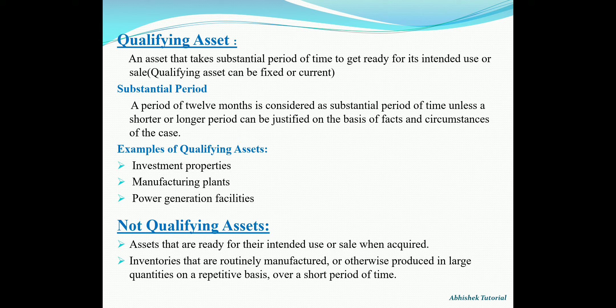Examples of qualifying assets include investment properties, manufacturing plants, and power generation facilities. Assets that are ready for their intended use or sale when acquired shall not be considered qualifying assets. For example, if a person goes to a car showroom and purchases a car, the car is already a finished product — no time is taken for its construction or production — so that car shall not be treated as a qualifying asset.